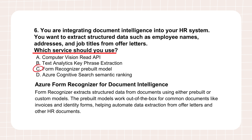The other options — Computer Vision Read API, Text Analytics Key Phrase Extraction, and Cognitive Search Semantic Ranking — don't fit. The Computer Vision Read API does OCR and pulls out text, but doesn't give you the structure or key-value pairs — just raw text. Text Analytics Key Phrase Extraction finds important topics, not specific fields like address. Cognitive Search Semantic Ranking makes search results more relevant, but doesn't extract structured data from documents in the first place. Form Recognizer is explicitly built for that document structure understanding and data extraction.